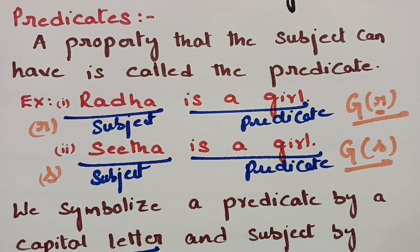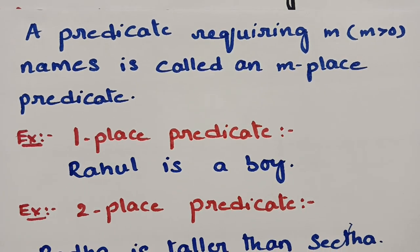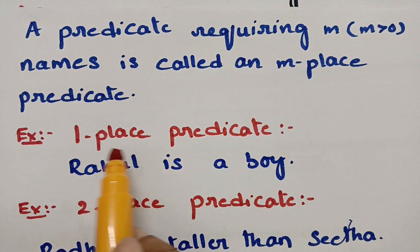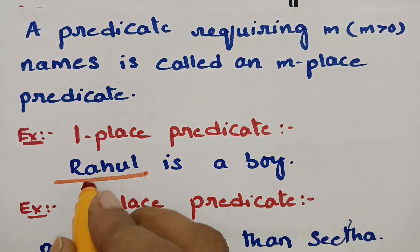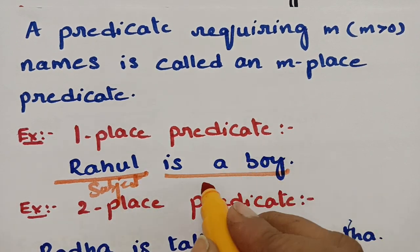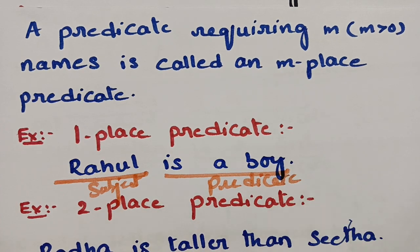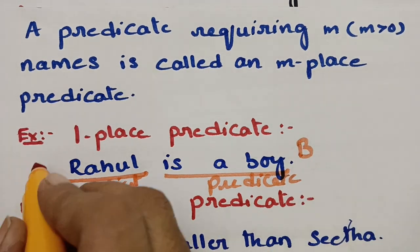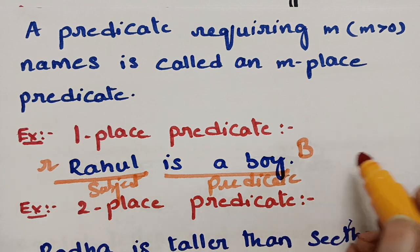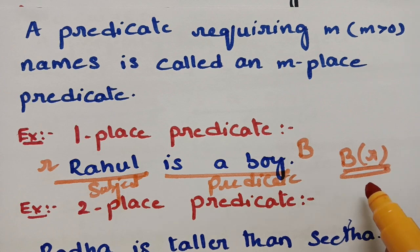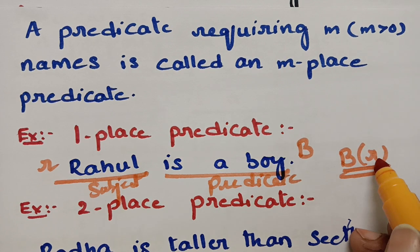Next topic: a predicate that requires M names is called an M-place predicate. If one name — one-place predicate; two names — two-place predicate; three names — three-place predicate; four names — four-place predicate. For example, 'Rahul is a boy' has one name (Rahul), so it is a one-place predicate, symbolized as B(r).